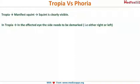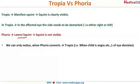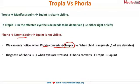The side of the tropia must be demarcated — it can be either left or right. In phoria, the squint is latent and you cannot make it out. We can only notice phoria when it converts to tropia, which happens when the eye is under some kind of stress. Phorias are usually seen in children — when a child is angry, crying, or distracted, the phoria becomes evident and converts into tropia.